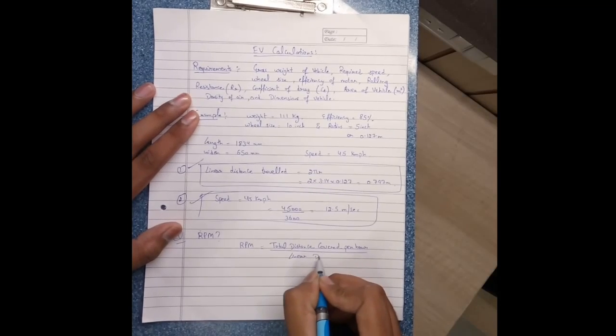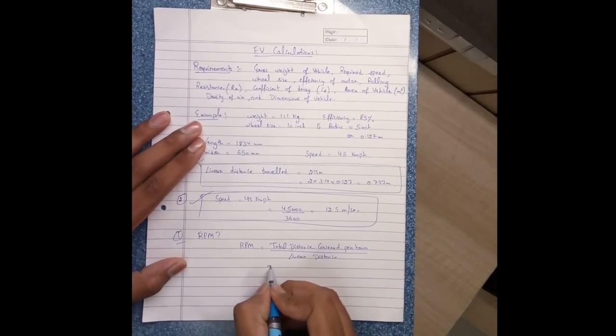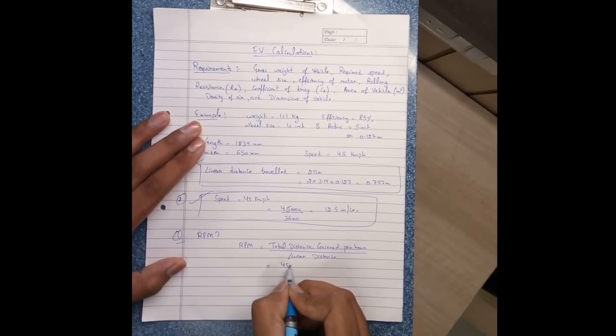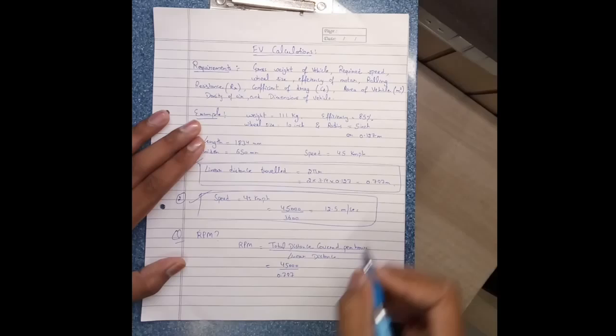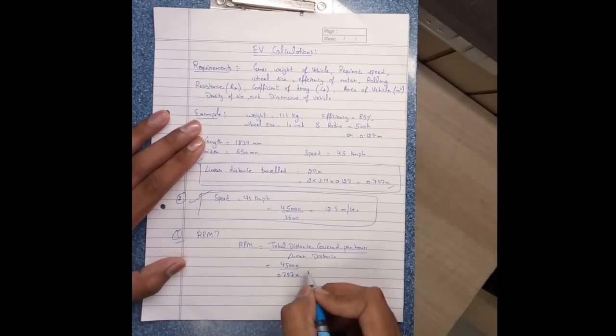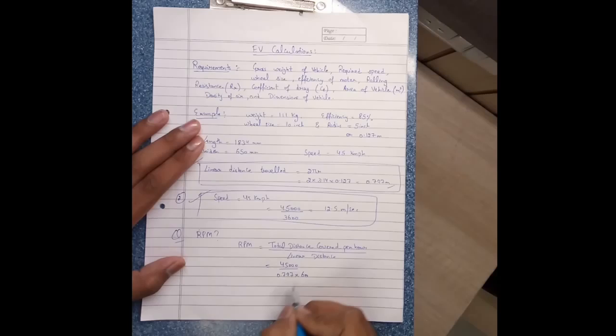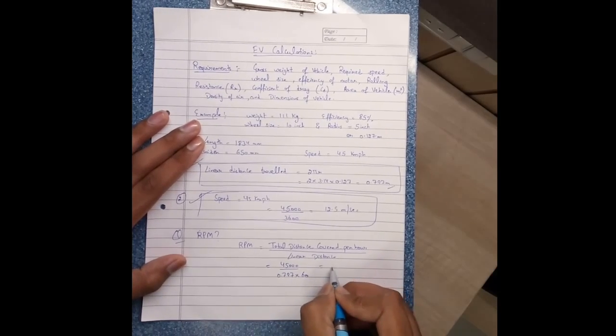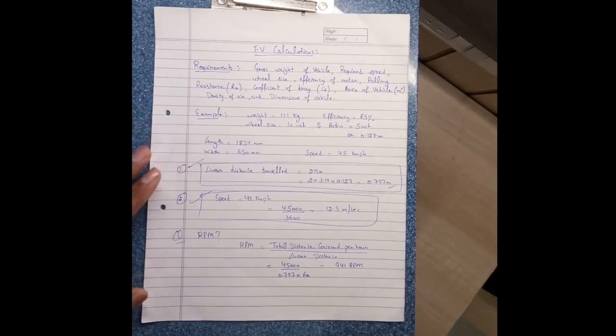...divided by linear distance, which is equal to 45,000 divided by 0.797, and divide by 60 to convert into minutes. It comes to 941 RPM. So this is RPM.